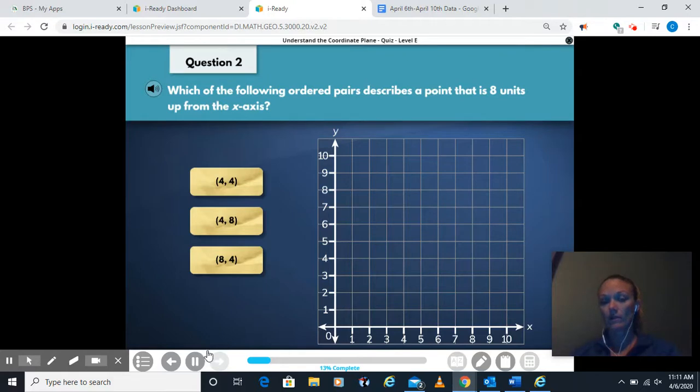So we go to the right or left first, in this case the right first, and then we would go up 8. So we're looking for the one that has an 8 in the y. So that would be our second one here.